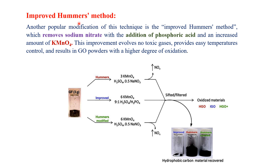In the improved Hummer method, the use of sodium nitrate is completely eliminated and replaced by phosphoric acid, and the amount of potassium permanganate is increased. This improvement involves no toxic gases, provides easy temperature control, and results in graphene oxide with a higher degree of oxidation. A comparison sketch shows that the simple Hummer method uses potassium permanganate, sulfuric acid, and sodium nitrate, while in the improved Hummer method, sodium nitrate is replaced by phosphoric acid and potassium permanganate is increased from 3 molar to 6 molar.